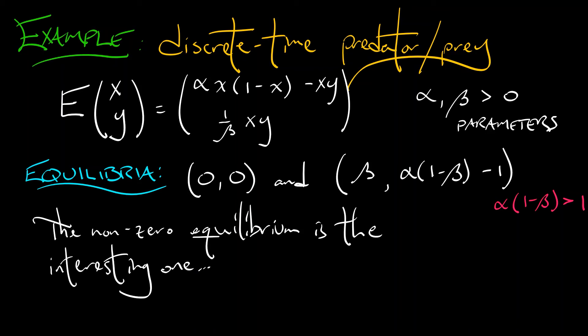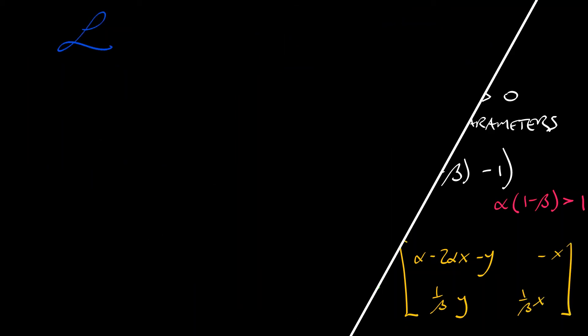Now, the next step is to compute the derivative of the right-hand side. Please take a little bit of time and check to see that the entries of that 2 by 2 matrix are alpha-2*alpha*x-y, 1/beta*y, -x, and 1/beta*x. And once you're finished checking the math on that, then we have a little bit of work to do.